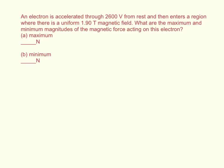An electron is accelerated through 2600 volts from rest and then enters a region where there is a uniform 1.9 tesla magnetic field. What are the maximum and minimum magnitudes of the magnetic force acting on this electron?